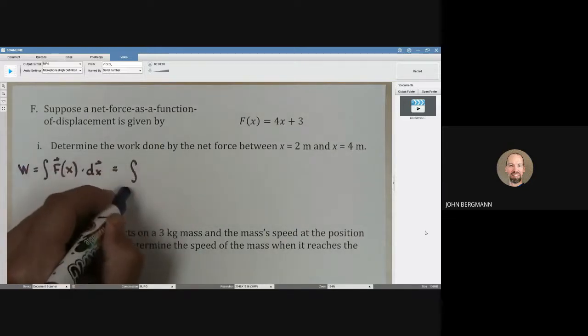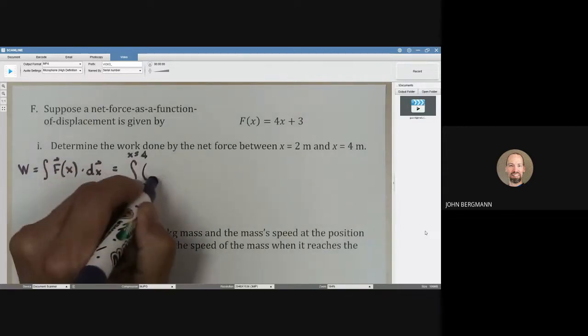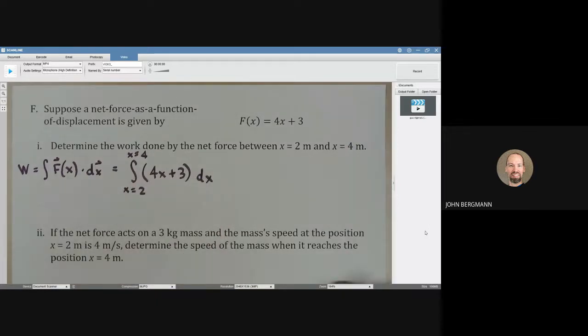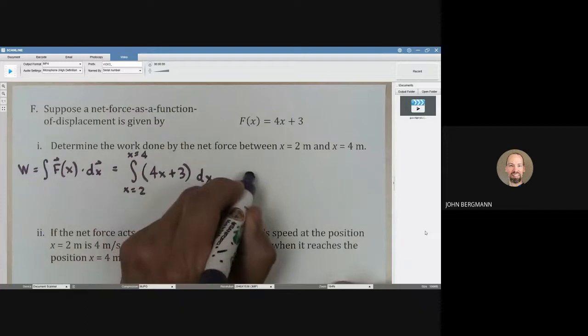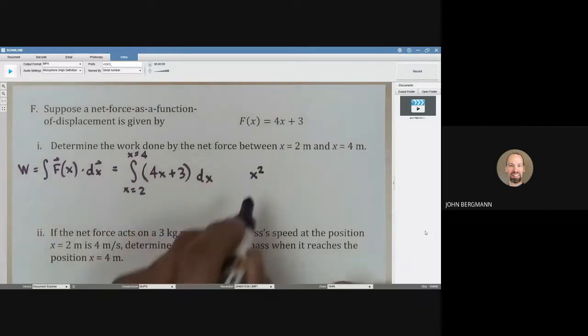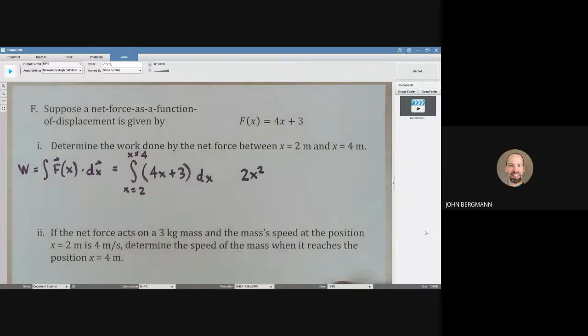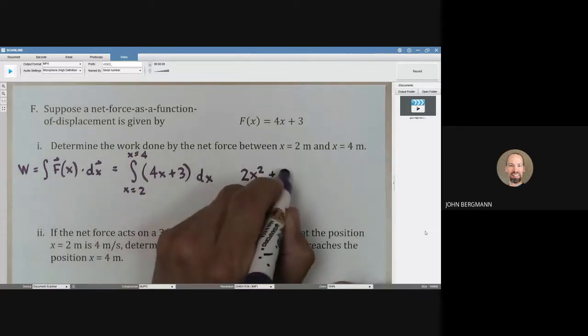We're going to integrate from x equals 2 meters to x equals 4 meters, 4x plus 3 dx. Whenever we integrate, we power up. So x is going to go to the second power. Then we divide by that power, and I think that's going to give us a 2 out front like that. And then we need to power up this one just like that.